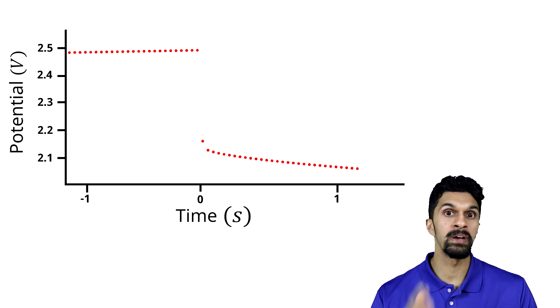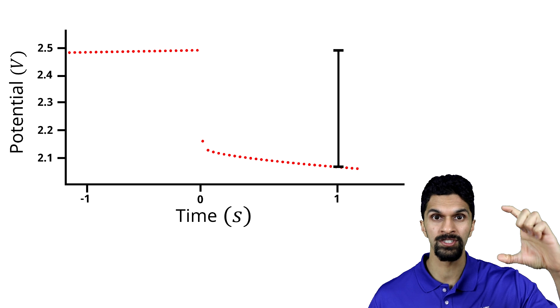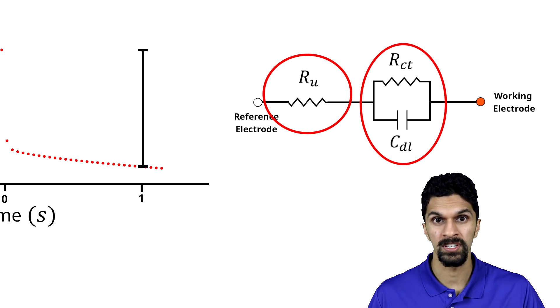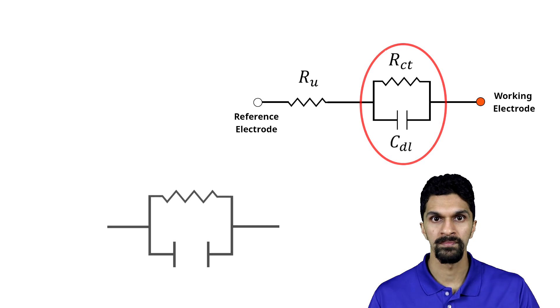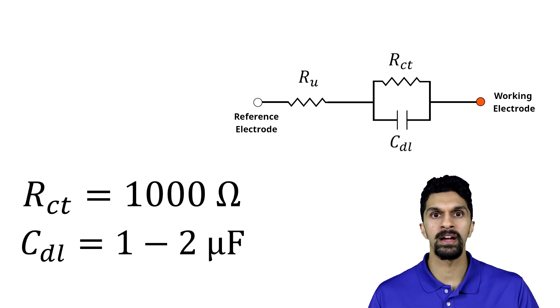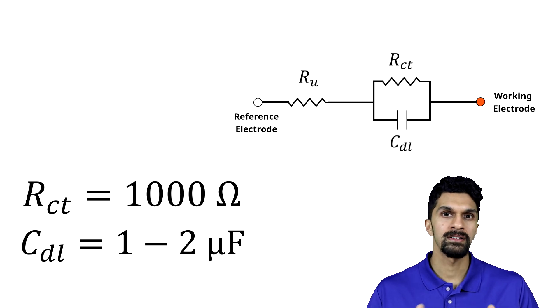One thing to know about both the current interrupt and potential step techniques is that both require very fast data acquisition rates, as we are dealing with the charging and discharging of a capacitor and there is a time scale associated with that process. For example, if you measure the potential one second after the capacitor discharged, the drop would contain both the uncompensated solution resistance and part of the working electrode interface, which is not what we want. For example, with a 1000-ohm charge transfer resistance and one to two microfarads of electrical double layer capacitance, the time scale of the RC circuit is a few milliseconds.